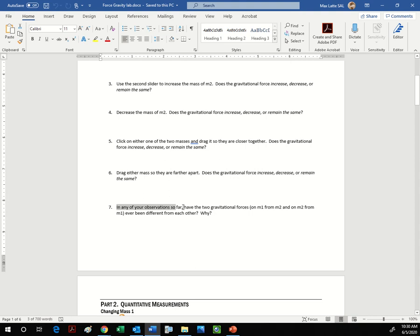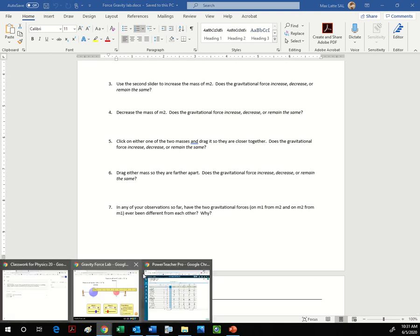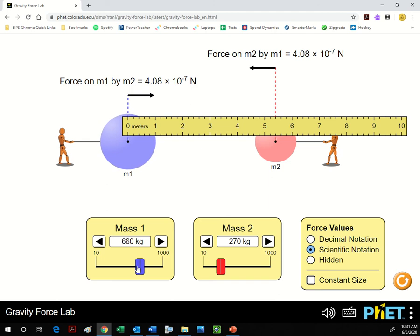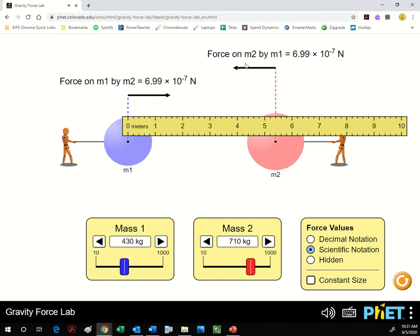This last one: in any of your observations so far, have the two gravitational forces on mass one or mass two ever been different from each other? Why? So if you take a look at this, if I change the mass, look at that, the gravitational forces are the same.